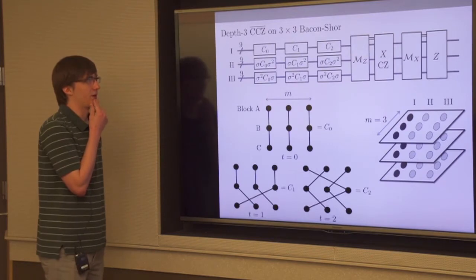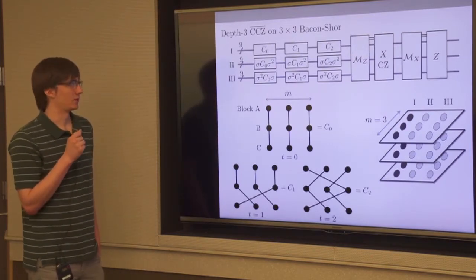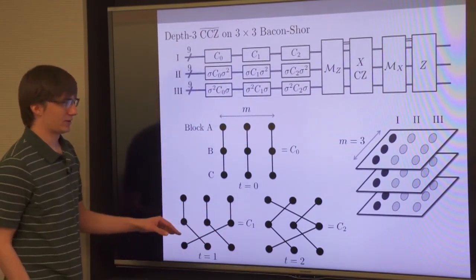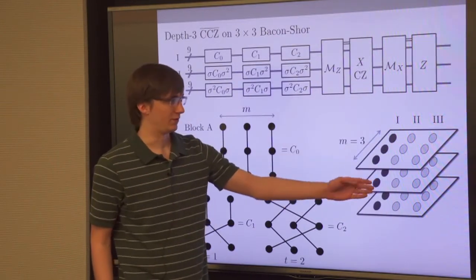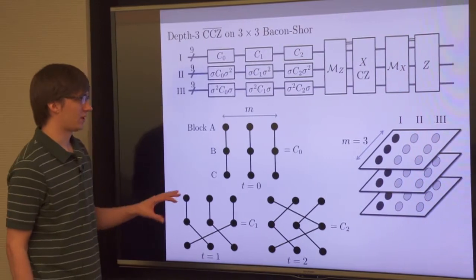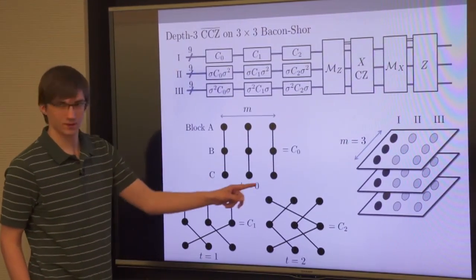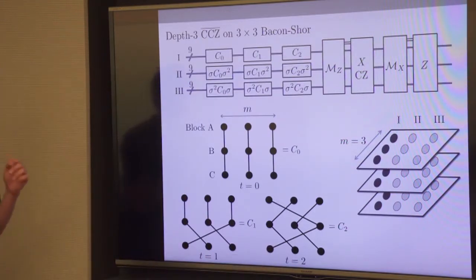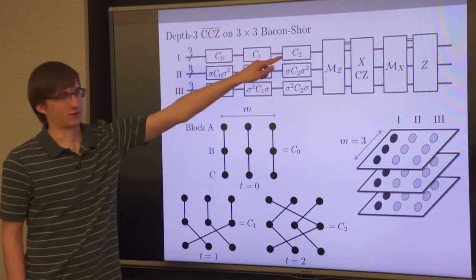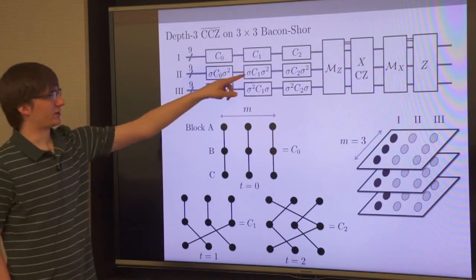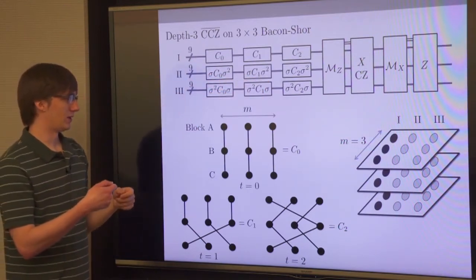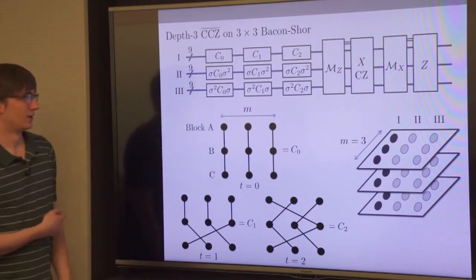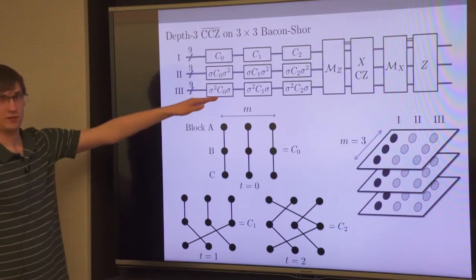Here's a circuit for doing logical CCZ on the three-by-three Bacon-Shor code. This picture takes place in the first column of the three Bacon-Shor code blocks. In the first column we have a depth-three circuit: C₀ at time zero, C₁ at time one, C₂ at time two. In column two we have C₀, C₁, C₂ with a permutation of some qubits — a cyclic shift of the first and third code blocks, shifting in opposite directions. In column three, C₀ is applied with the permutation applied twice.